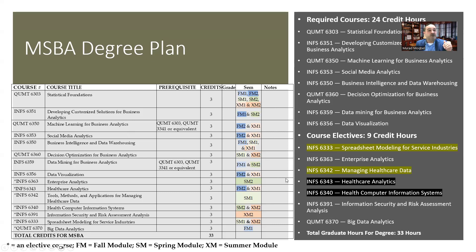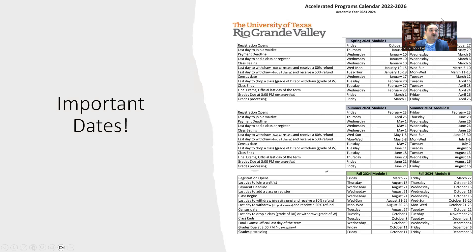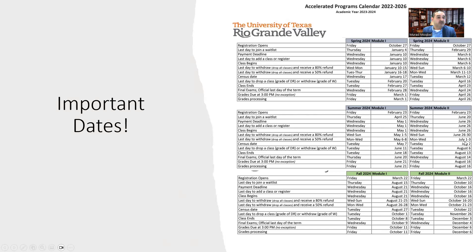That way you know you can graduate within 12 months if you choose to take two courses every seven-week module, or you can take one course per module if you plan to take longer than one year — whatever works with your work schedule works for us, because your success is our success. This is the accelerated program calendar, which tells us when each module starts. For example, Spring Module 2 starts on March 6th.